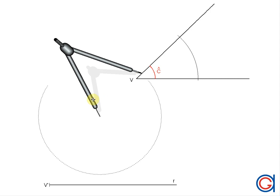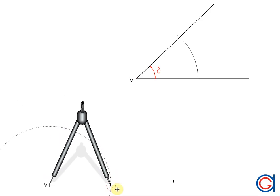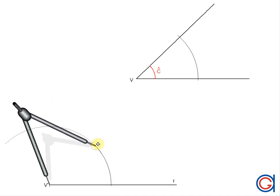Now with the same radius and centering the compass on V' of the horizontal line, we scribe another arc until it cuts the horizontal ray R at a point we will call A', as can be seen here.